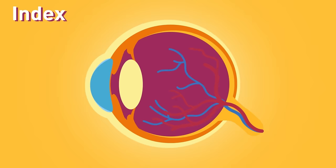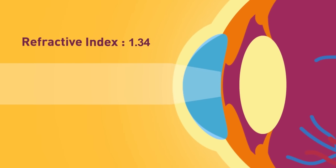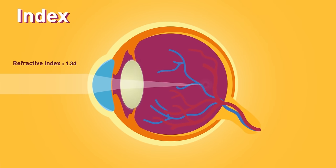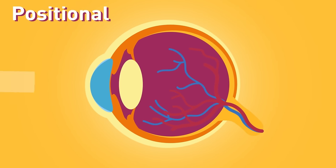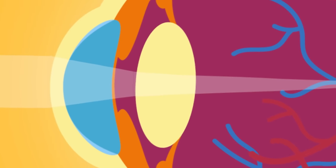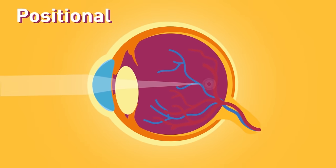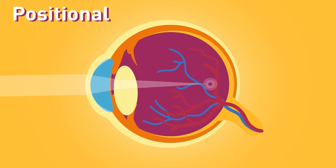Index: increase in refractive index — i.e. light bending or focusing power — of the lens, for example in cataract. Positional: anterior displacement of the lens, e.g. after trauma. This again causes light rays to be focused in front of the retina.